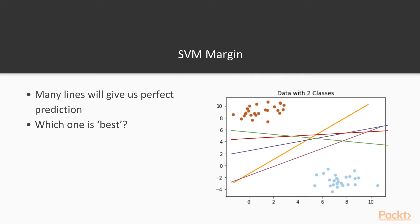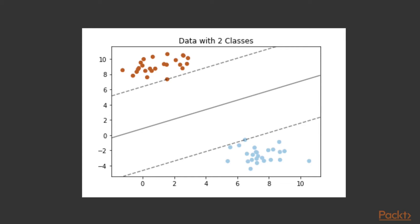But there are many potential lines that could give us a perfect classification here. We could draw a ton of lines. This is a pretty easy data set to separate. And it's an important question to ask, which one of these lines is actually the best? Because if you look at each of them here, they're all perfectly accurate. The way we define which is the best line when it comes to classification and when it comes to SVM is the line that provides the maximum margin.